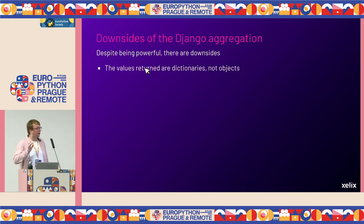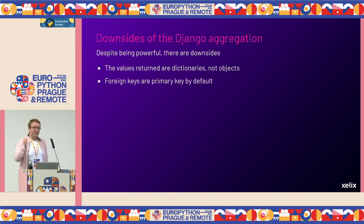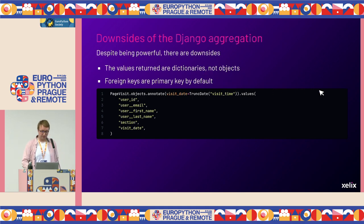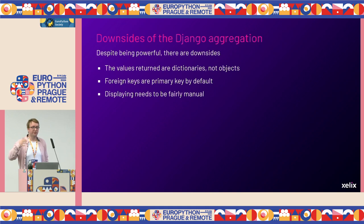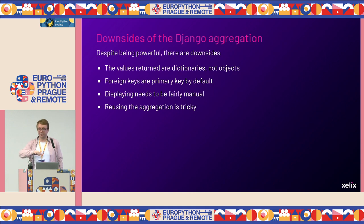Obviously it works, but there are some downsides. It's very powerful, but what I find annoying is it returns dictionaries, not objects — so if you want to define custom methods on the aggregation, you have to call them on the dictionary or go through another layer. Foreign keys are selected only as primary keys by default; if you want more user information you have to explicitly list it in values or select it with a custom method. Displaying is fairly manual because Django doesn't know what the dictionary will be, so in the serializer you have to list everything explicitly with types. And reusing the aggregation can be tricky — you might have to define a method on a manager or a service layer. And it can be quite slow.